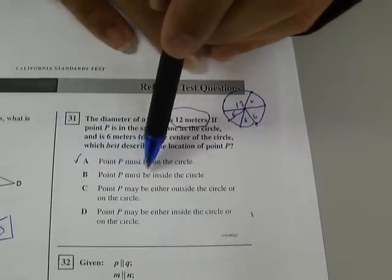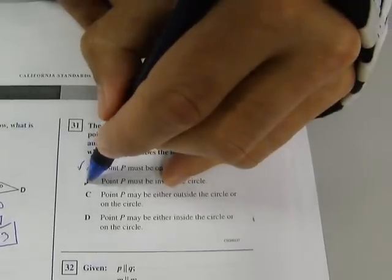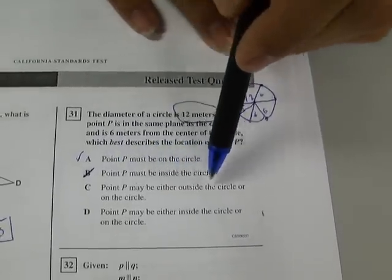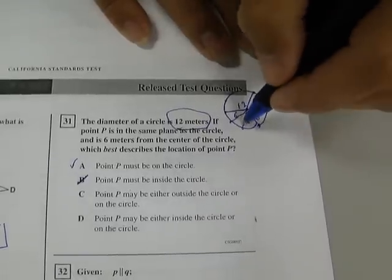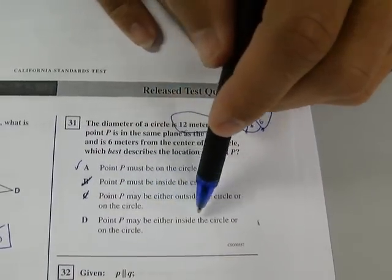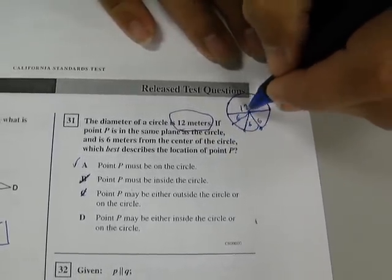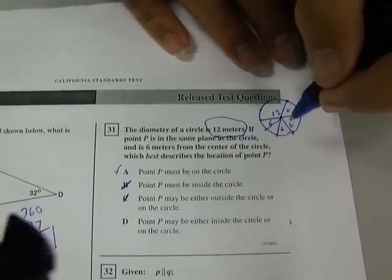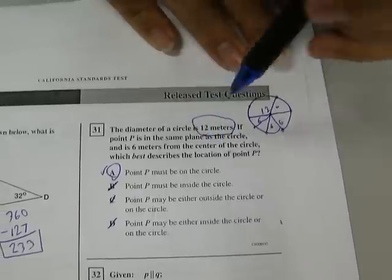Point P must be inside the circle. No, inside the circle, anything less than six would be inside the circle. So that cannot be the answer because P is exactly six from the center. Point P may be either inside or outside the circle or on the circle. No, that's just not true. Point P can only be on the edge of the circle. So it cannot be C. Point P may be either inside the circle or on the circle. It can't be inside because it's exactly six from the center. And again, any distance that's six away from the center is on the edge because six is the radius. So the only answer that makes sense is A. Point P must be on the circle. And there you have it.